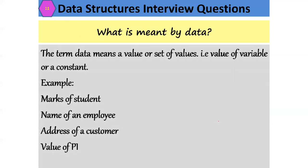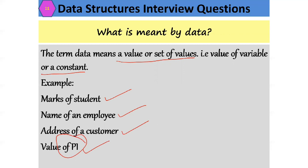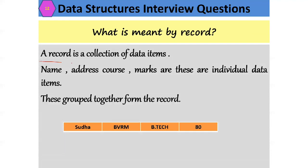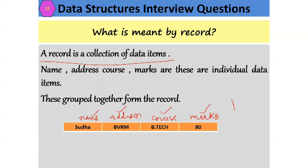What is meant by data? The term data means a value or set of values — it is the value of a variable or a constant. Examples include the marks of a student, the name of an employee, the address of a customer, or a constant like 3.14. What is a record? A record is a collection of data items. For example, for a student record the fields are name, address, course, and marks. A row in a table containing values like 'Sudha, Chennai, BPEC, 90' is called a record.